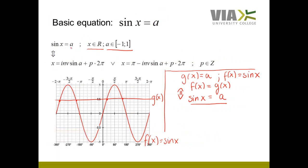In general, when sin x equals a, a must be between minus 1 and 1 for the equation to have solutions. The solutions are x equals arcsin(a) plus p times 2pi, or x equals pi minus arcsin(a) plus p times 2pi. Look into the next videos if you want to figure out how to solve the basic equations cos x equals a and tan x equals a.